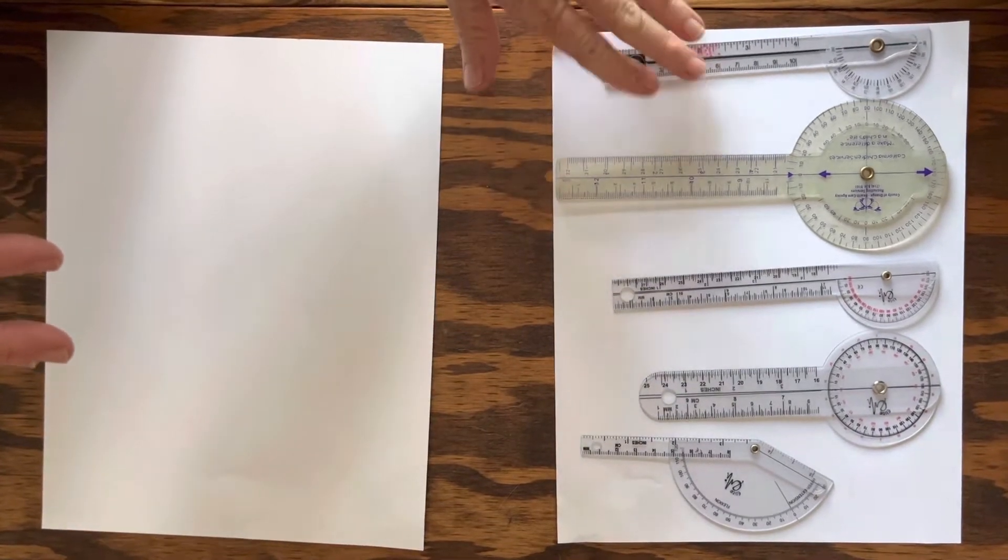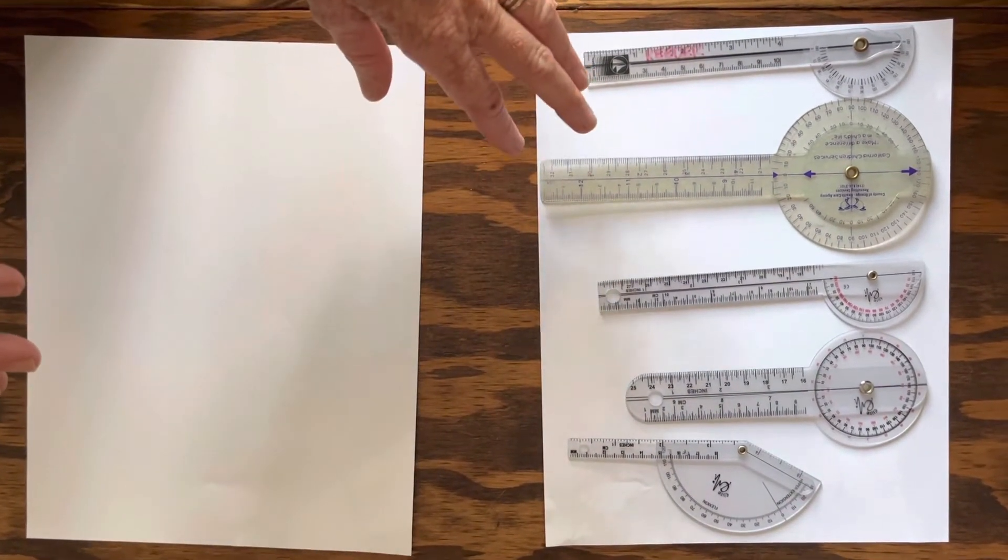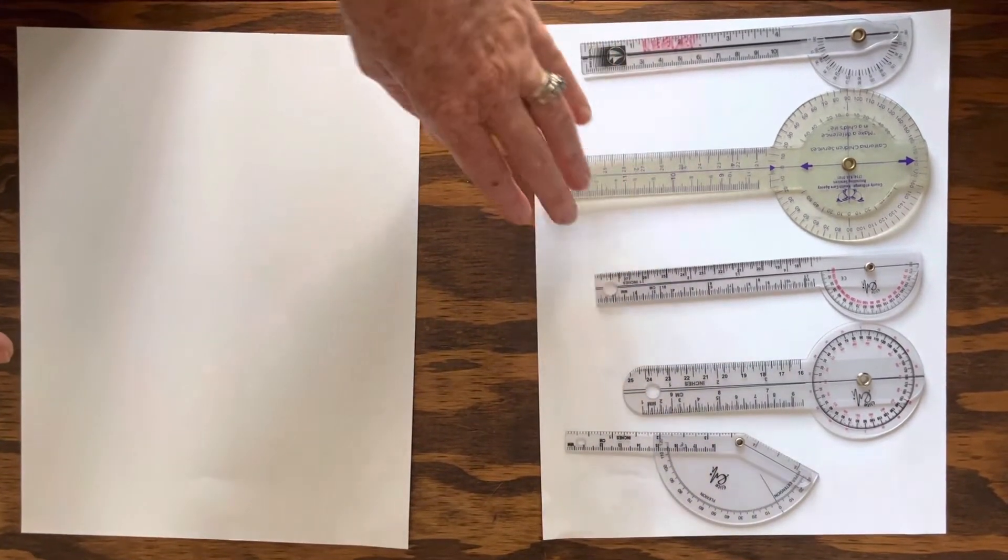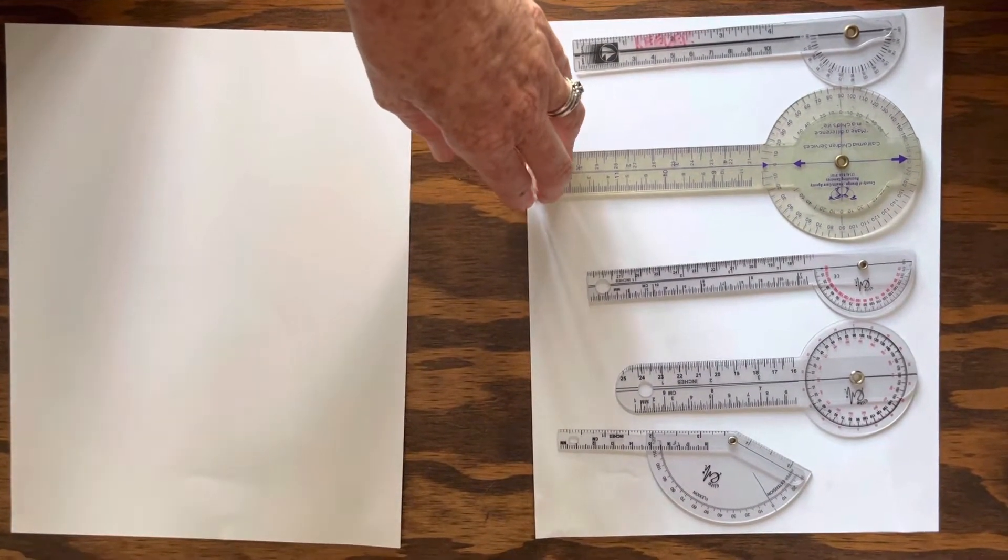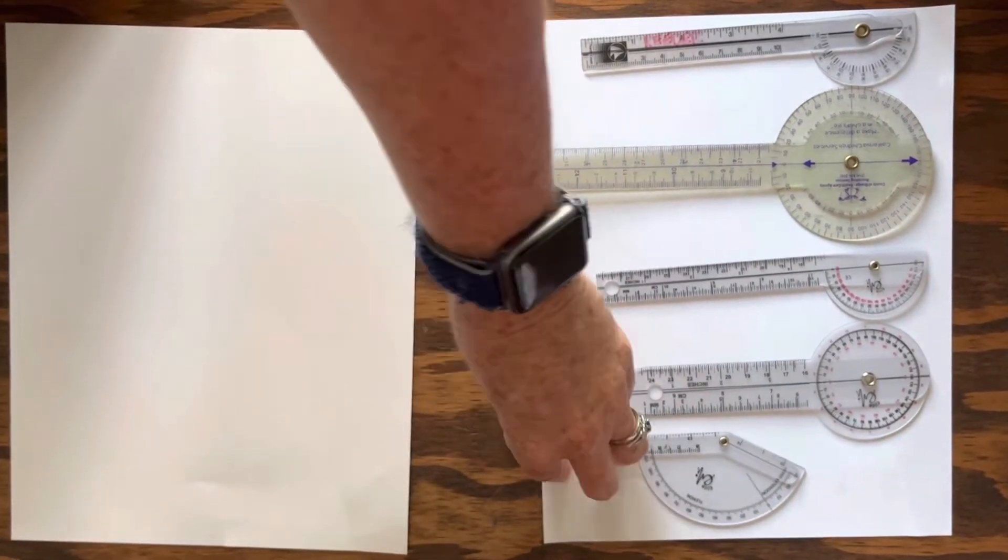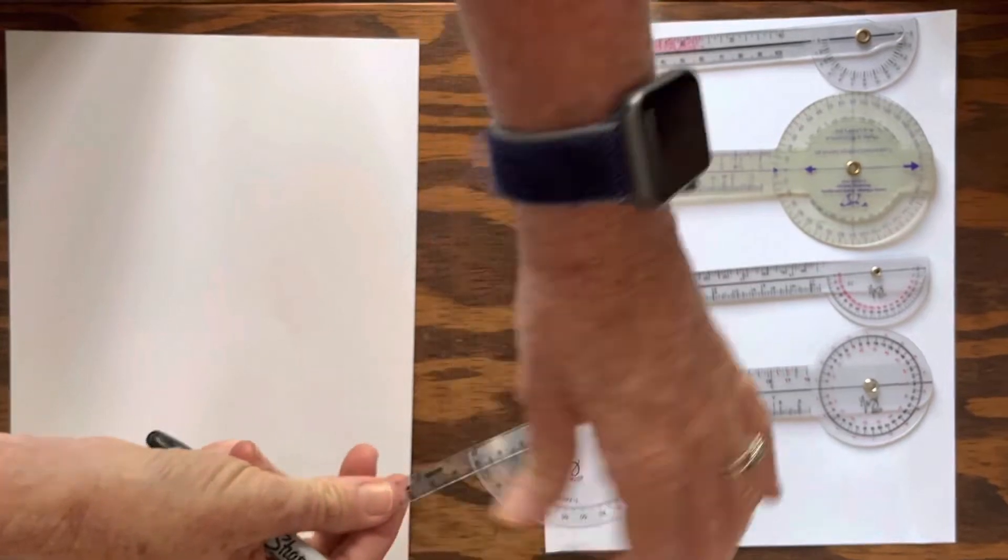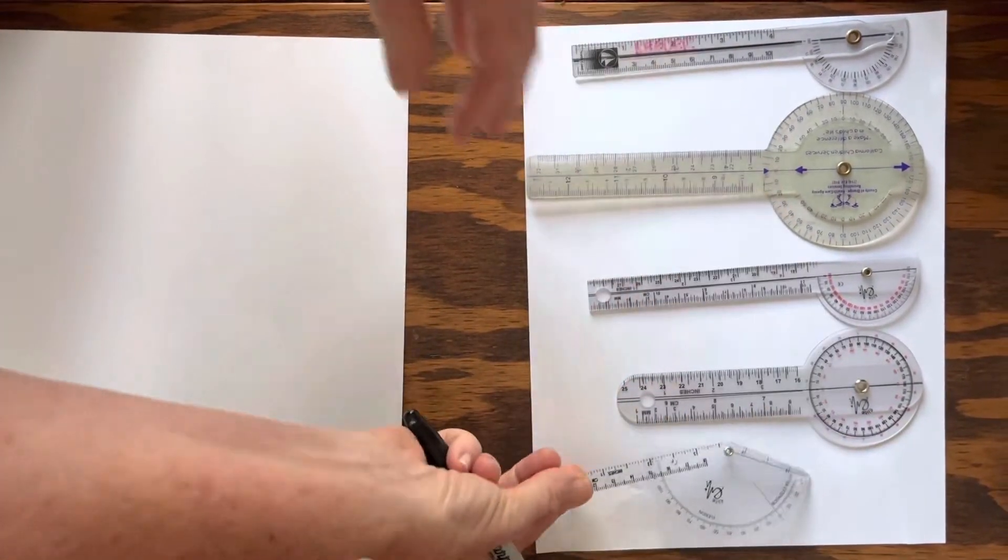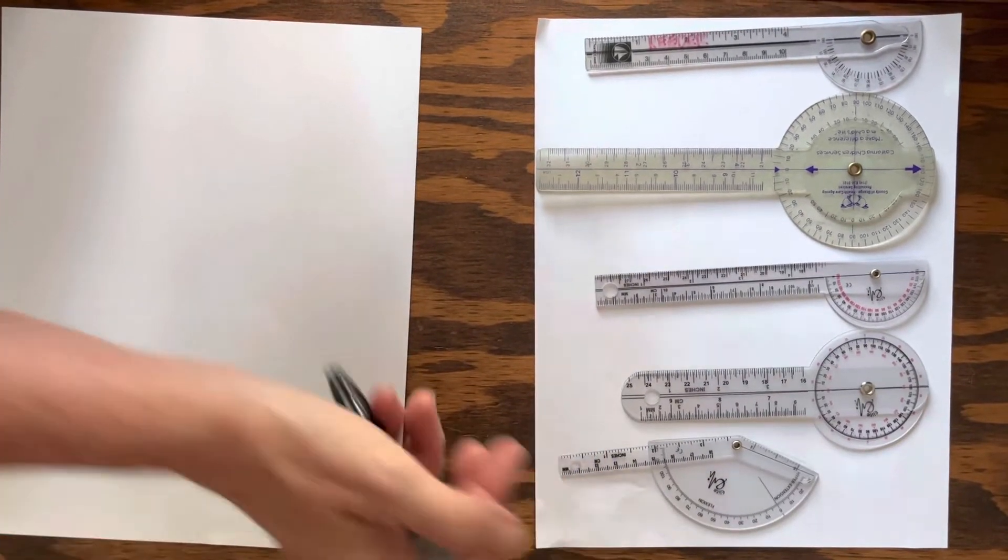The smaller ones are best for measuring those smaller joints of the hand and fingers. The bigger one is definitely better for measuring bigger joints like the shoulder, the hip and the knee. And then we have the hyperextension goniometer over here that will measure hyperextension at a joint, so it's shaped a little bit differently. You will learn more about that in subsequent semesters.